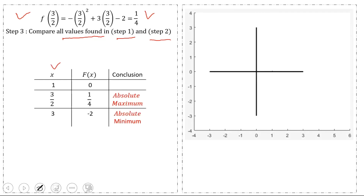We set up a table with columns for x values, the value of the function at x, and the conclusion. At x = 1, f(1) = 0. At x = 3/2 (the critical point), f(3/2) = 1/4. At x = 3, f(3) = -2. We can see that at x = 3/2 the value 1/4 is the greatest — this is the absolute maximum. At x = 3 the value -2 is the smallest — this is the absolute minimum.